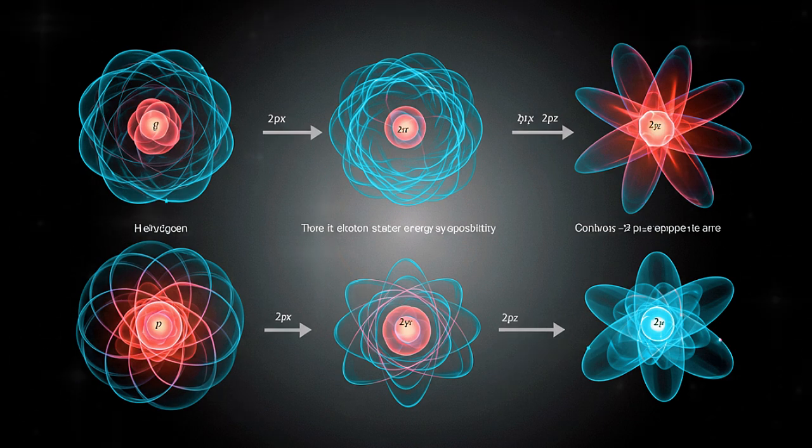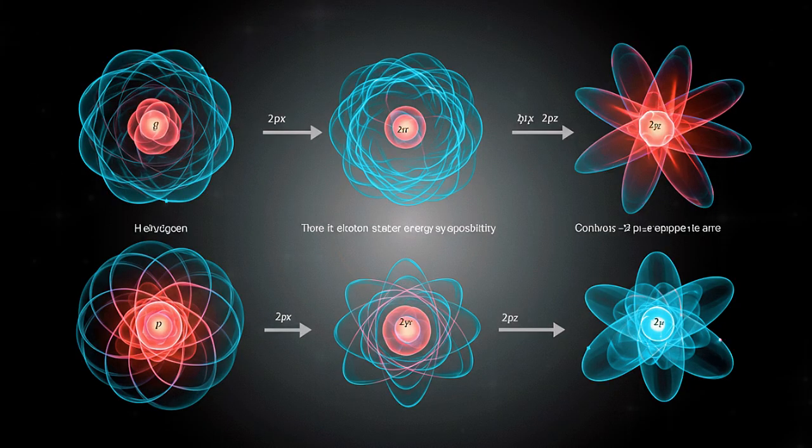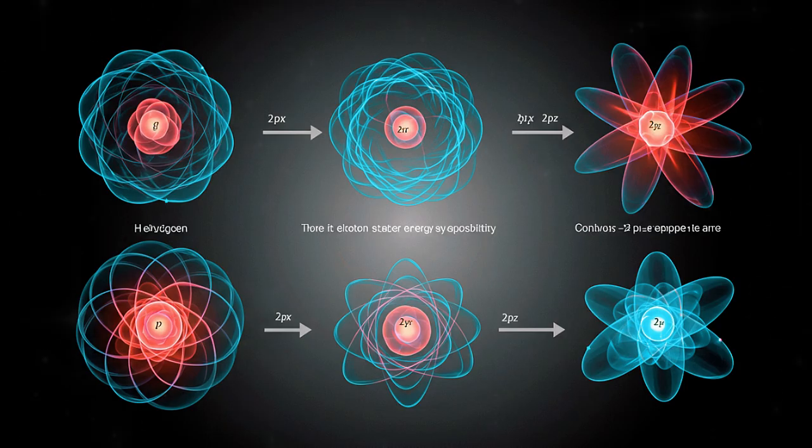However, once the electric field activates, the negative electron cloud experiences a pull slightly toward the positive side of the field, while the massive positively charged nucleus shifts minimally in the opposing direction. This causes the atom to become slightly tilted or polarized.